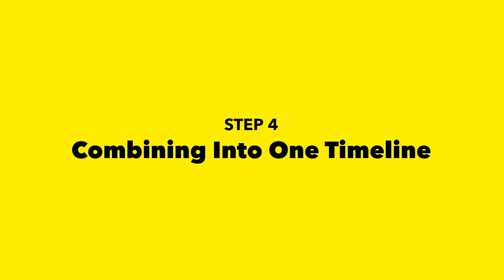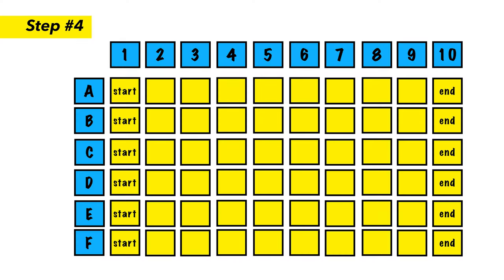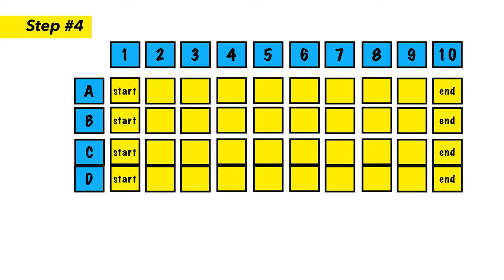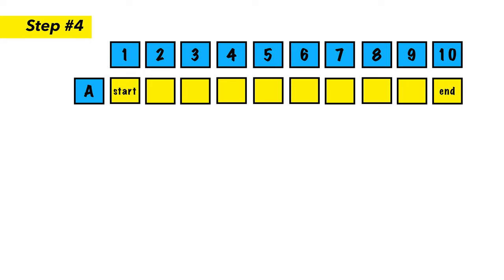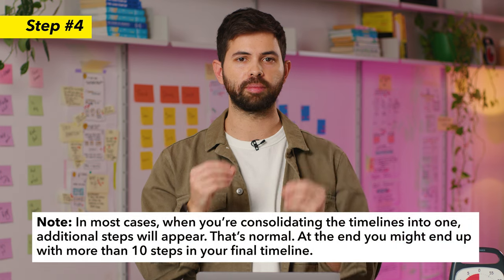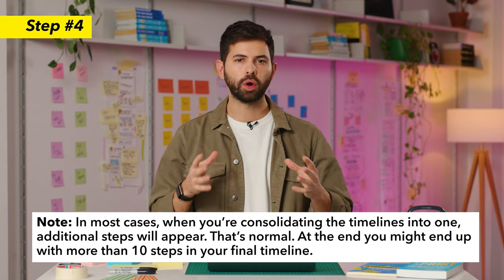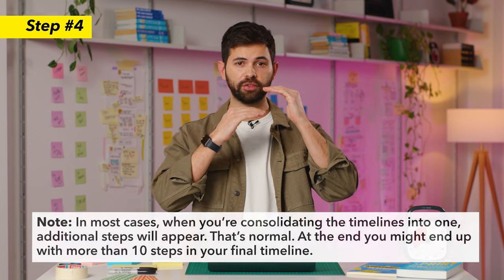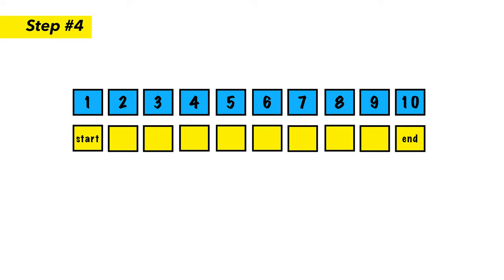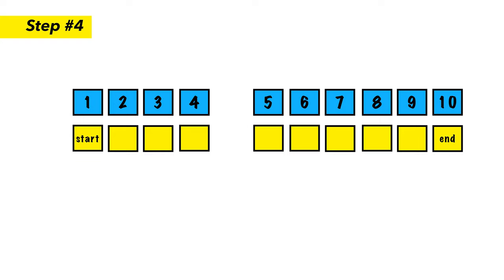So your next job as a facilitator is to take all these different timelines and merge them into one single big timeline. While doing it, make sure you remove any duplicates. You might also notice that there are things that have to happen parallel to each other, so you can have this timeline and whatever happens in parallel, just put them next to it.